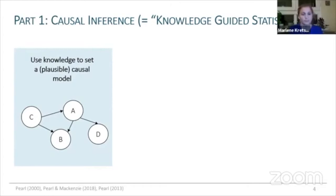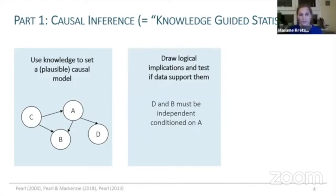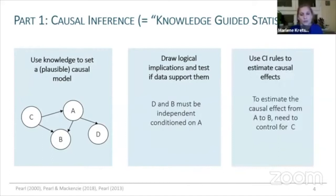The causal model is usually shown in the form of a network, where nodes like A, B, C represent processes such as ENSO or precipitation. This network encodes all our domain knowledge and assumptions of the underlying processes which generated the data. Explicitly outlining these assumptions first has the advantage that we can draw logical implications from this model and test if they're supported by the data.